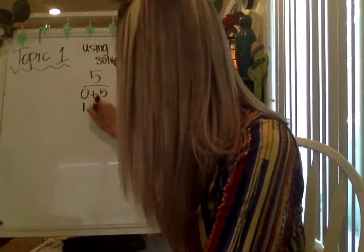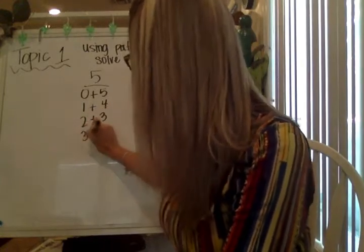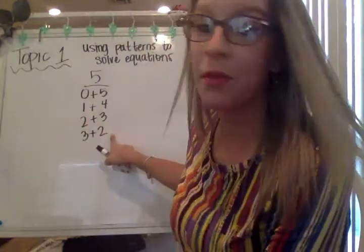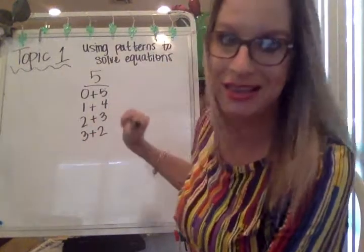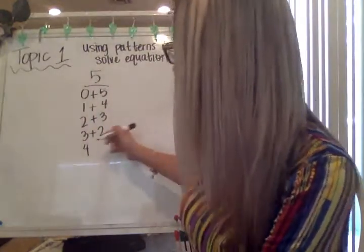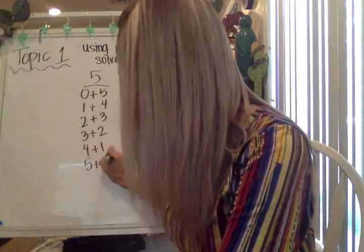if I was looking at different ways to make the sum of five, I would start with saying zero plus five, one plus four, two plus three, three plus two. Now remember we can show these in two different ways just like that. Even though they're the same addends we can show it that way. Four plus one and five plus zero.